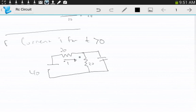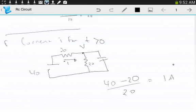20, 20. So basically we have 40 minus V. I solved for V already, just 20. Divided by 20. So, 1 amp times E to the negative T over the time constant, 20 microseconds.